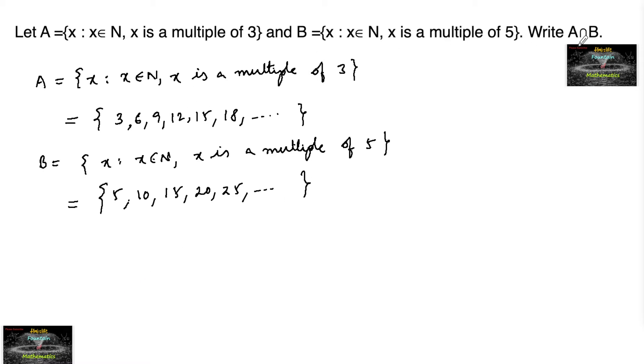And we need A intersection B. Intersection is nothing but the common. So we can write here A intersection B is nothing but the common, which is x such that x belongs to natural numbers and x is a common multiple of 3 and 5.